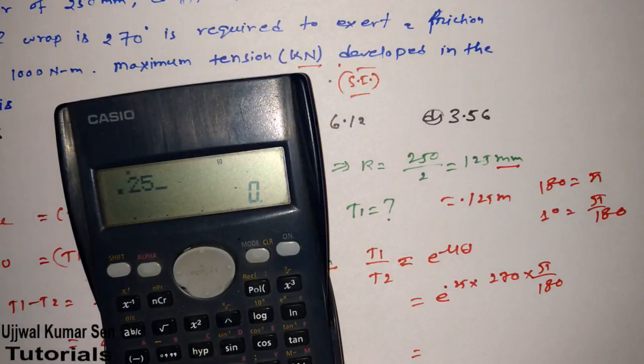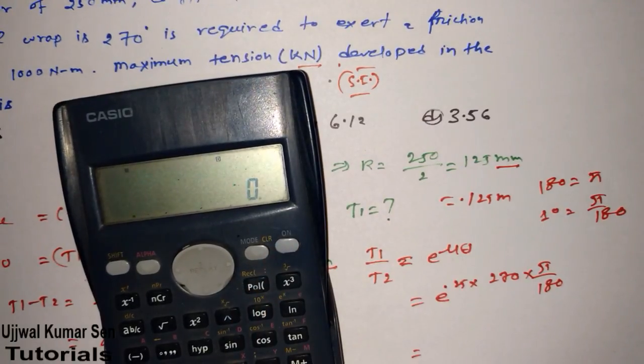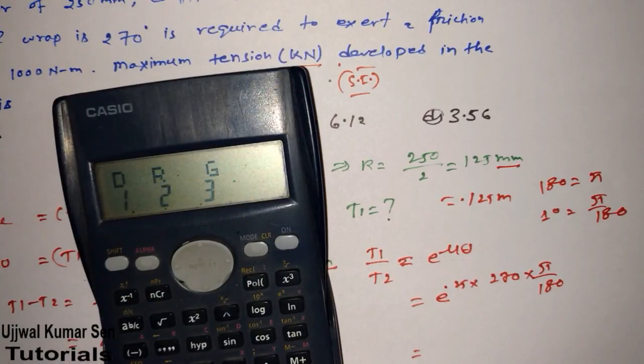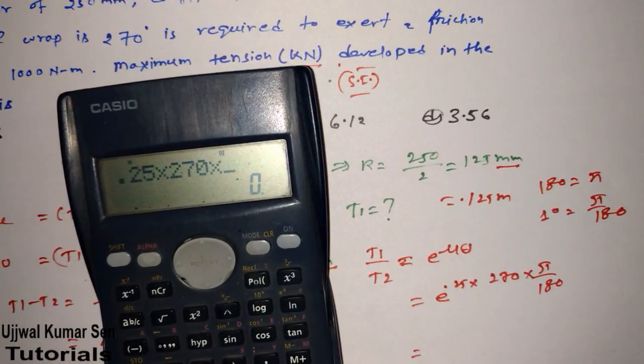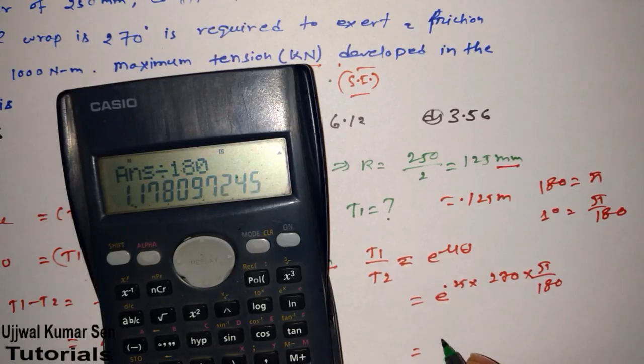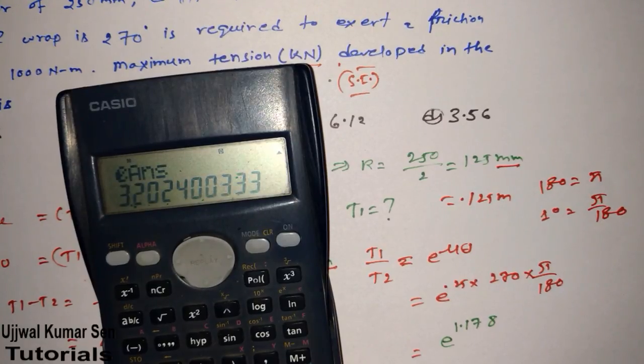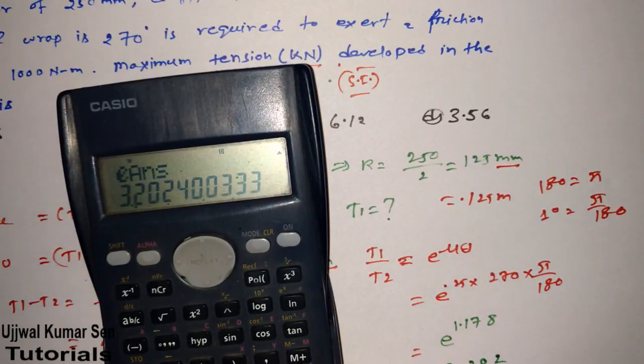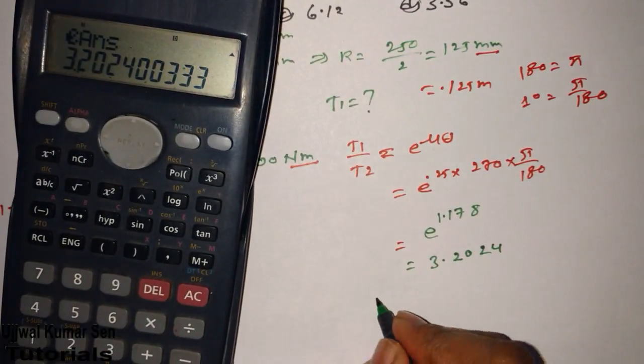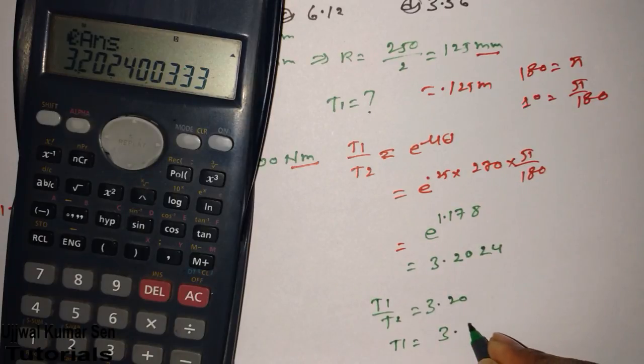How much values we are getting? 0.25 multiple 270 multiple pi. Division 180. So we got e to the power 1.178. Let's find out. It's e to the power of e. Answer is 3.202. So what we got basically from here. T1 by T2 is equal to 3.20. Therefore, T1 is equal to 3.20 T2. So we got this value from here.